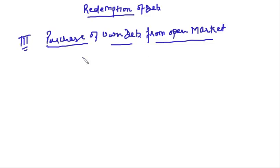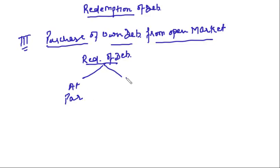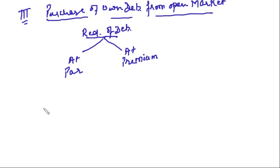Redemption of Debentures can be of two types — either at par or at premium. In the last lecture we discussed about Redemption of Debentures at par, where redemption is done by Purchase of Own Debentures from Open Market and the company immediately cancels the own debentures. We issued the debentures at 100 rupees and we are redeeming the debenture at 100 rupees — that is at par.